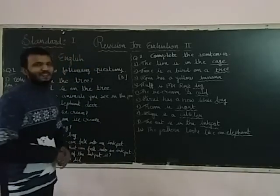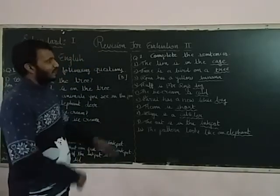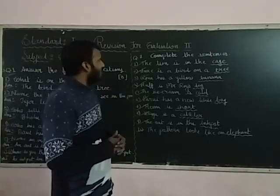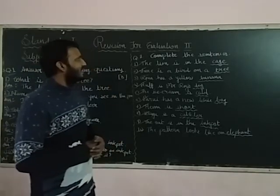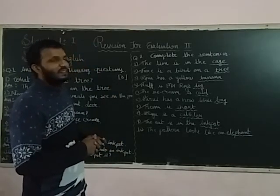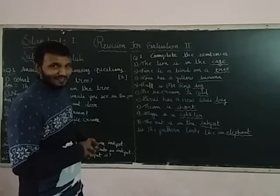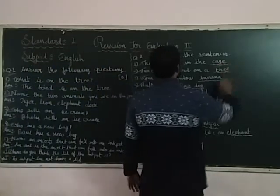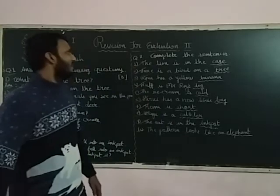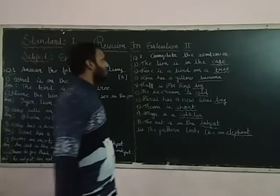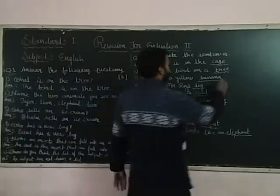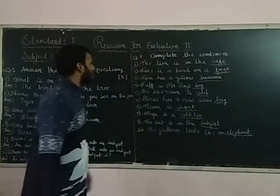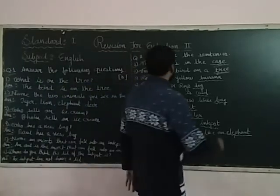Question number 2: Complete the sentences. It will be for 5 marks. First number: The lion is in the blank — answer is cage. Second number: There is a bird on the blank — answer is tree. Third number: The blank is yellow — answer is banana.